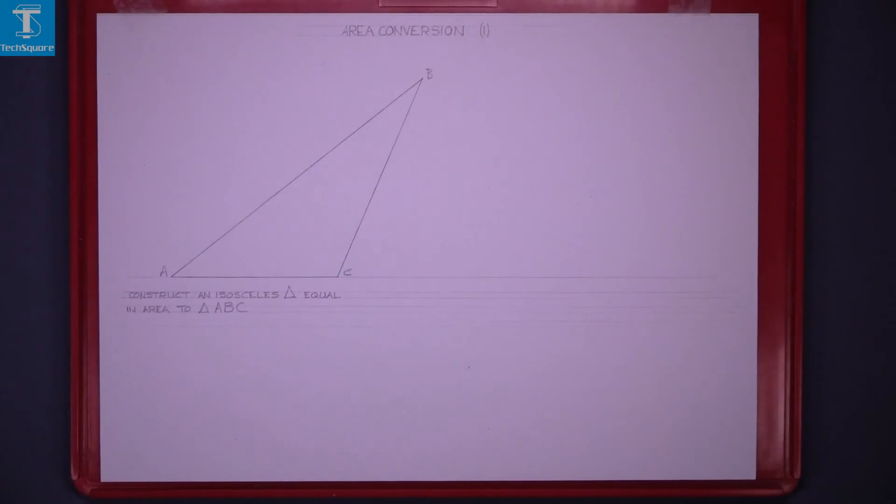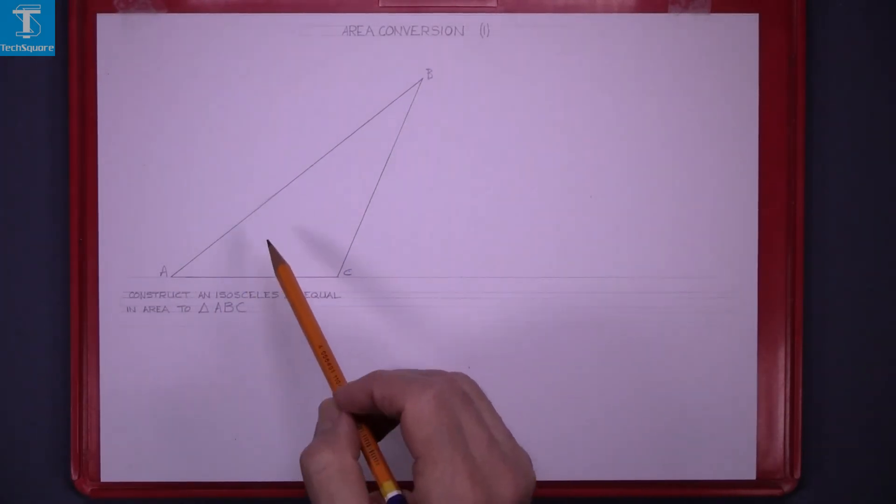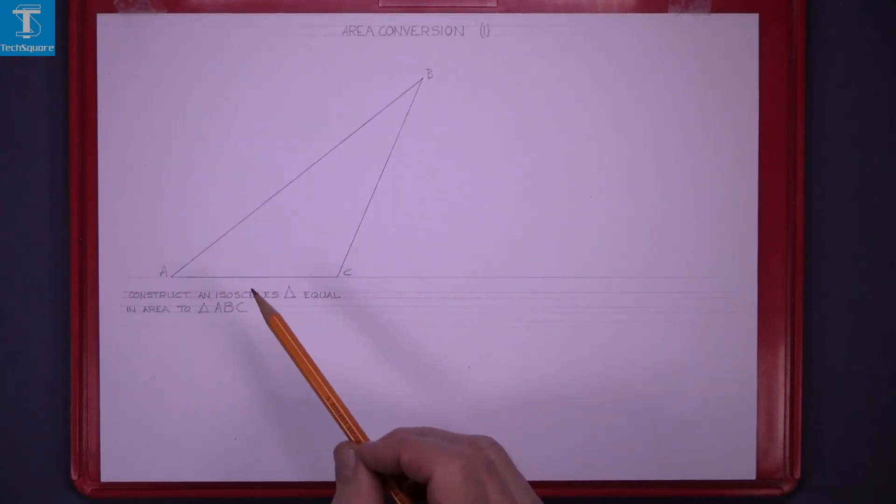Now this is a question on it. Construct an isosceles triangle equal in area to the given triangle ABC. Given this triangle ABC and we're asked to draw an isosceles triangle equal in area to it. An isosceles triangle has two equal angles.